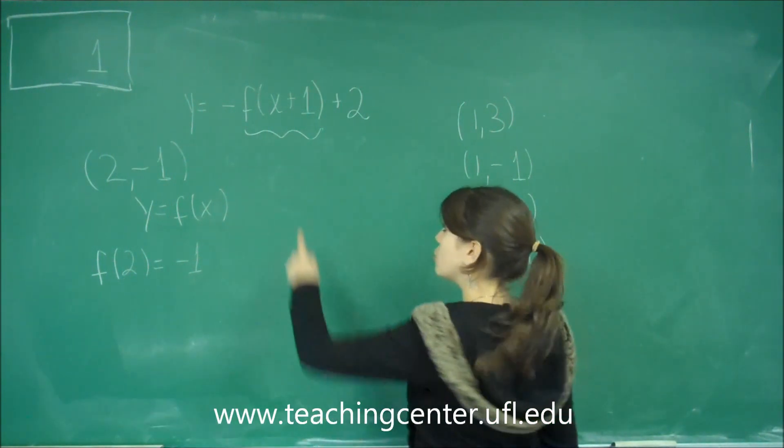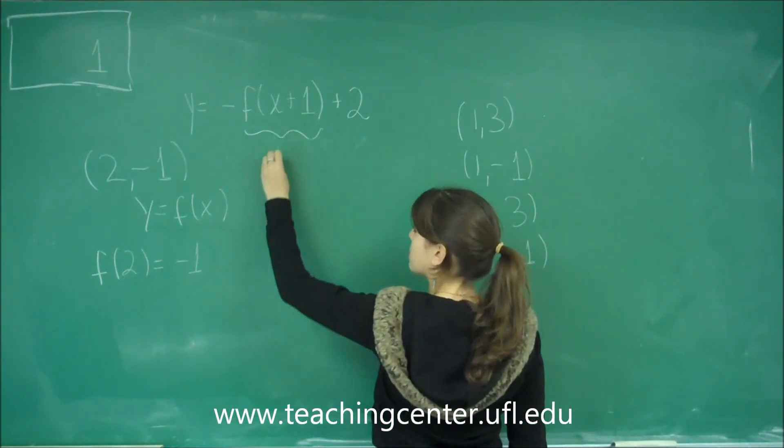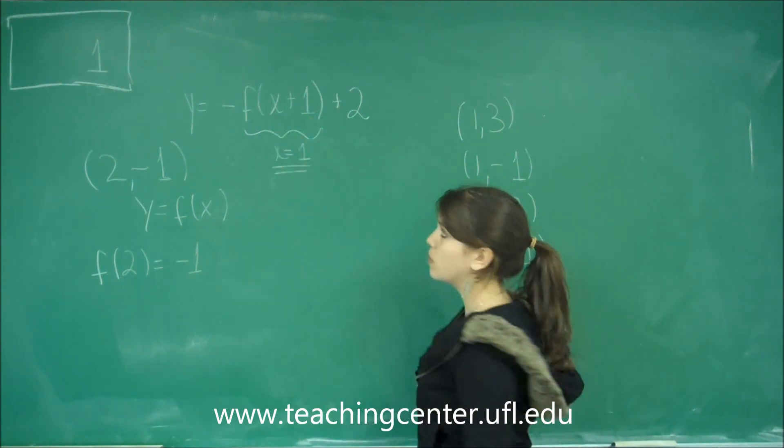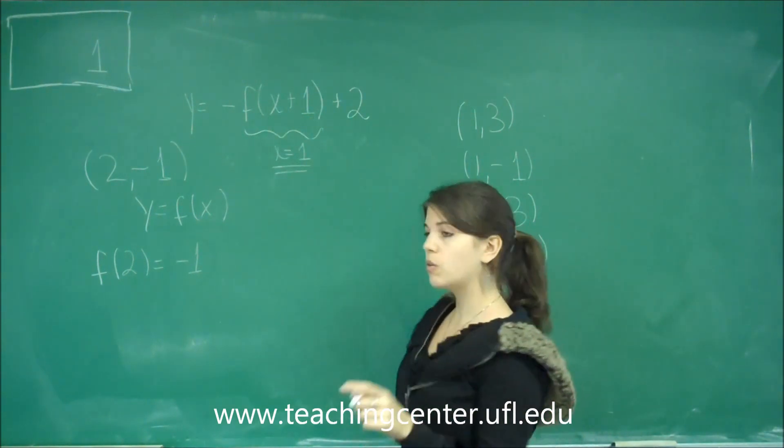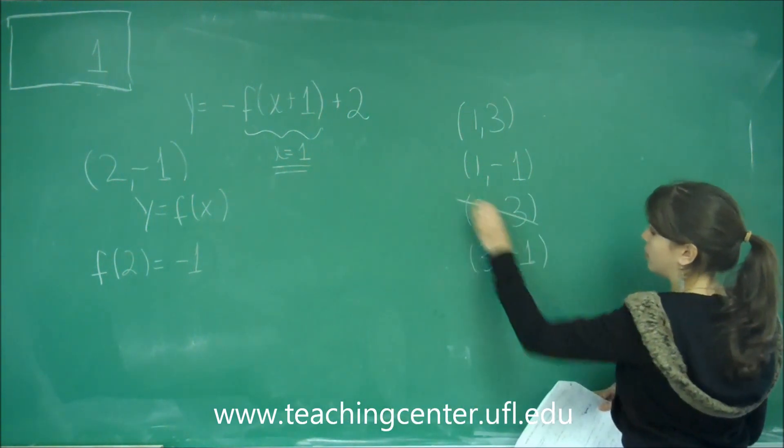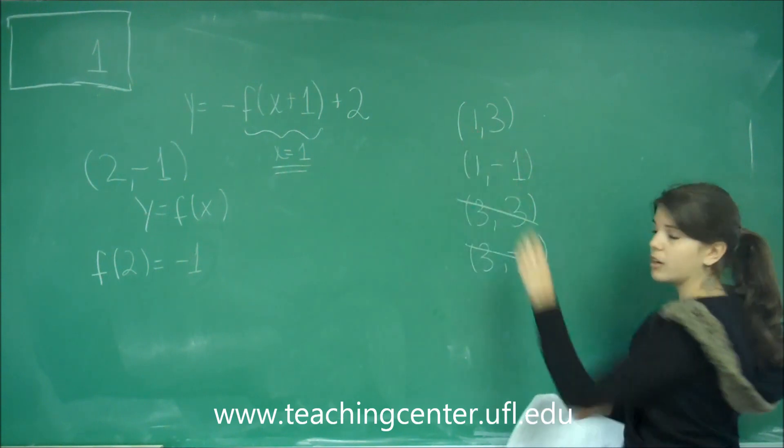So in order to get 2 here, we need x to equal 1, because 1 plus 1 is 2, and we get f of 2. So the only solutions we would be able to get from the choices that we have are the first two, where x is 1.